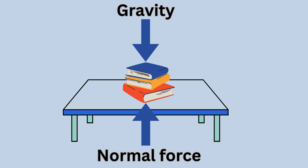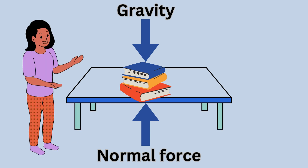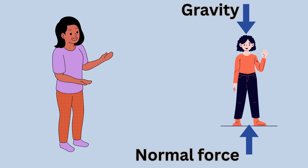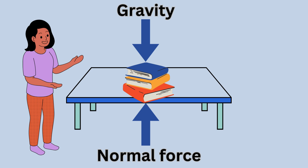But we can show them on a force diagram. We can show the direction of the force on a force diagram. Each force is shown as an arrow. When the forces are equal, the arrows are the same size. Forces act in pairs. In the picture, the book exerts a downward force on the table.